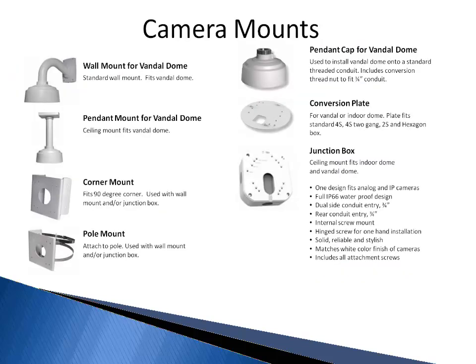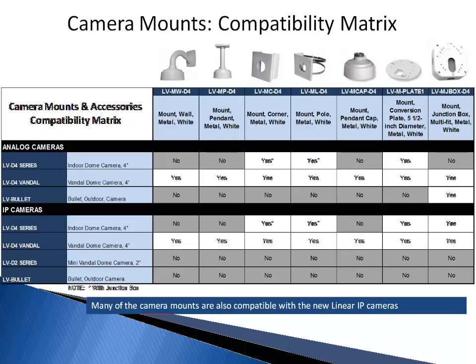These camera mounts are compatible with both the new analog and IP cameras. No matter where you are mounting the cameras — wall, ceiling, corner, pole, junction box — we've got you covered. This is our compatibility matrix for all the mounting accessories available. Most of these wall mount options are designed for outdoor use since indoor use is typically attached to a ceiling or wall. The wall mounts include a one-year warranty.